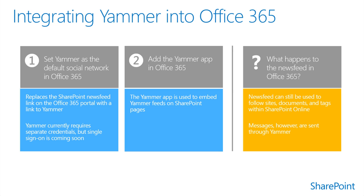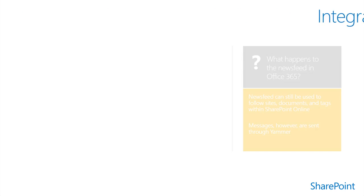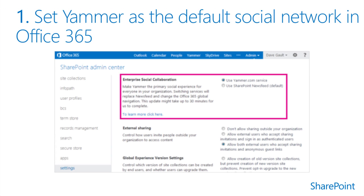Yammer is a best-in-class enterprise social network that brings together employees, content, conversations, and business data in a single location. It empowers employees to collaborate in real-time across departments, geographies, and business applications. You can add Yammer functionality to your SharePoint sites by adding Yammer to the navigation bar or by using the Yammer app to embed a Yammer feed in a site. Yammer comes in two varieties: Yammer Basic, which is free and available to all users, and Yammer Enterprise, a premium version offered standalone and with various SharePoint Online and Office 365 plans that provides additional tools to help organizations set up the best possible enterprise social network.